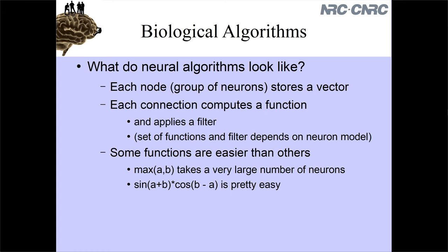I also briefly mentioned that not only does it compute a function on those vectors, but also the dynamics of the synapse are going to end up applying a temporal filter - some sort of smoothing of that data over time. That's going to become very important in this lecture. The particular details of what functions the neurons are good at and what types of filters you get depend on the biology, the neuron model, and what's going on at these synapses.